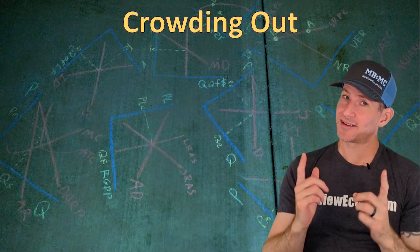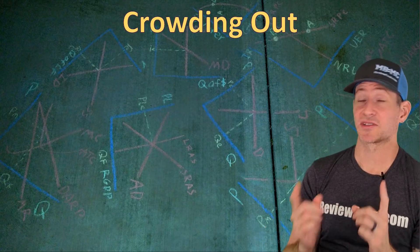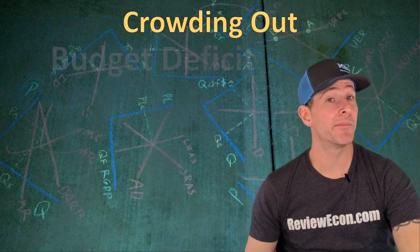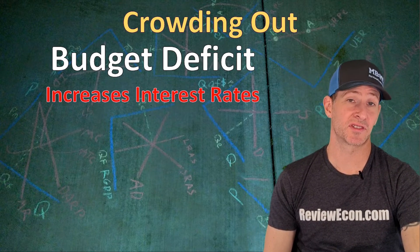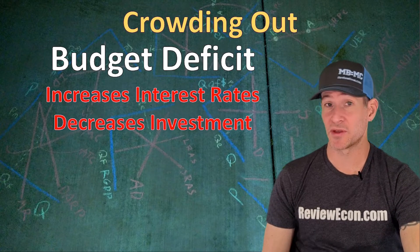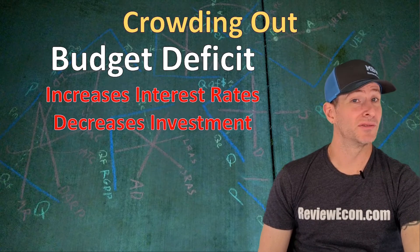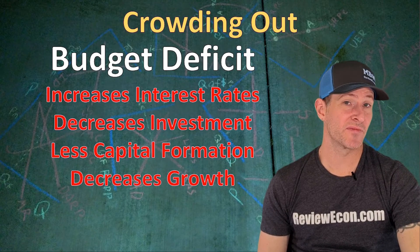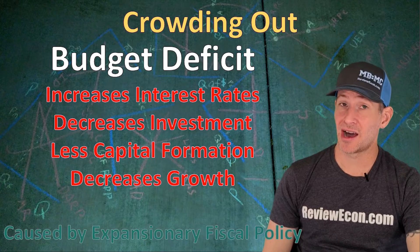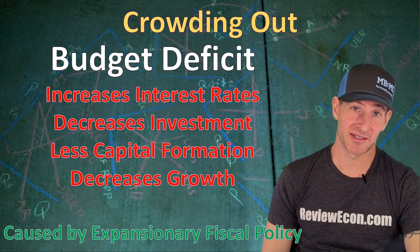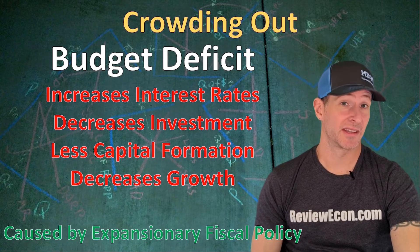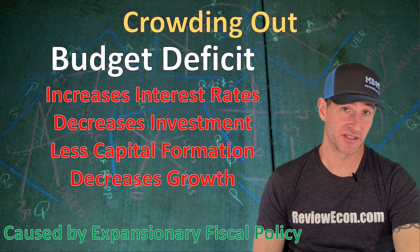Now we're on to crowding out. Crowding out is the technical reason why some economists are worried about the national debt. To summarize: a budget deficit is going to cause higher interest rates. Those higher interest rates are going to decrease gross investment within the economy, which leads to less capital formation, and less capital formation means slower economic growth. Crowding out is caused by expansionary fiscal policy — decreasing taxes or increasing government spending — both of which increase the deficit and the national debt.